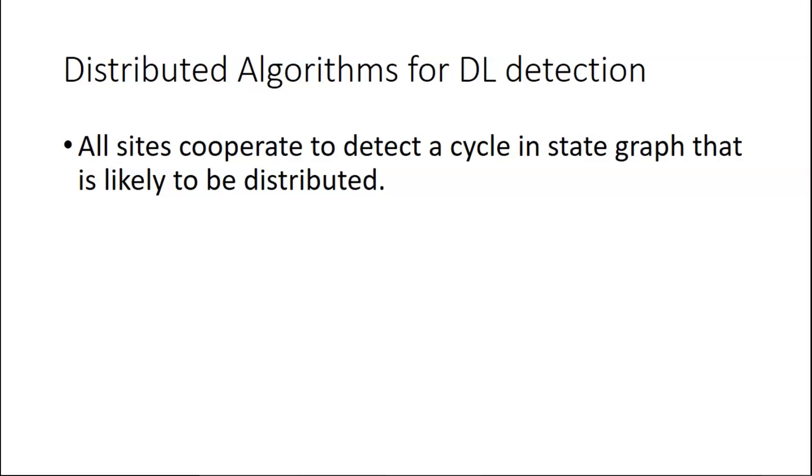So here, in distributed organization, as we know already, all sites cooperate in detecting a cycle. There is no controller site. All sites cooperate in detecting a cycle in state graph that is likely to be distributed to the sites.